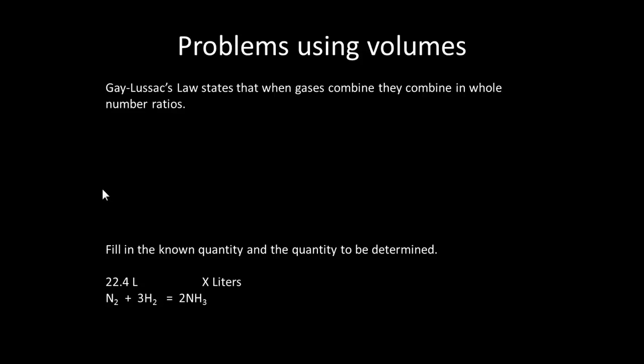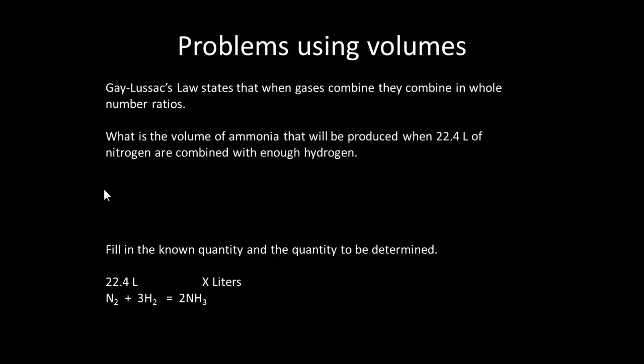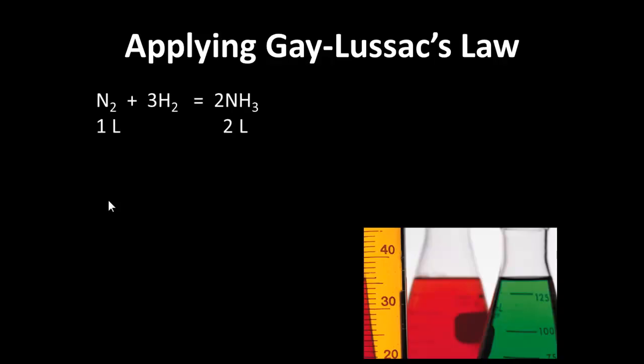We can also do problems using volumes by making use of Gay-Lussac's law, which states that when gases combine, they combine in whole number ratios. What volume of ammonia is going to be produced if you have 22.4 liters of nitrogen combining with hydrogen? We start by writing out the equation: N₂ plus 3H₂ gives 2NH₃. We fill in the quantity: 22.4 liters of nitrogen, and the quantity to be determined is x liters of ammonia. From Gay-Lussac's law, 1 liter of nitrogen gives 2 liters of ammonia.